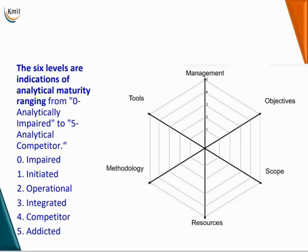The six levels are: 0 is impaired, 1 is initiated, 2 is operational, 3 is integrated, 4 is competitor, and 5 is addicted.